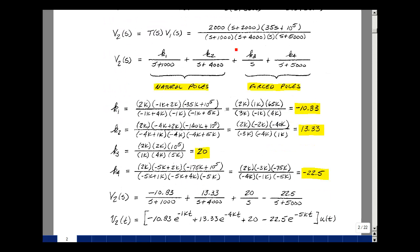To find k1, we're going to multiply this expression by s plus 1,000. That'll cancel here, and we'll let s equal minus 1,000. So we have 2,000 times (minus 1,000 plus 2,000) times (minus 35,000 plus 100,000) divided by (minus 1,000 plus 4,000)(minus 1,000)(minus 1,000 plus 5,000). That's equal to 2,000 times 1,000 times 65,000 divided by 3,000 times minus 1,000 times 4,000. That's a negative 10.83.